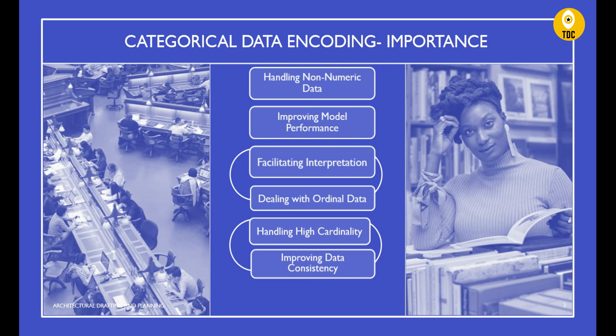The third point is facilitating interpretation. Some encoding techniques, such as one-hot encoding, make it easier to interpret the impact of a categorical variable on the outcome by representing each category as a separate feature itself.